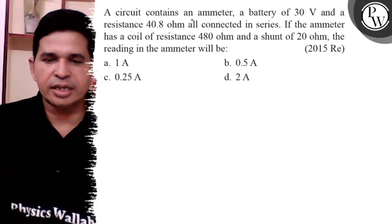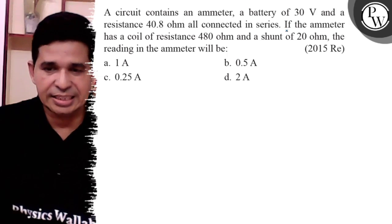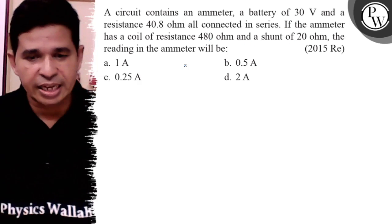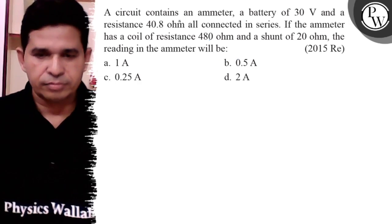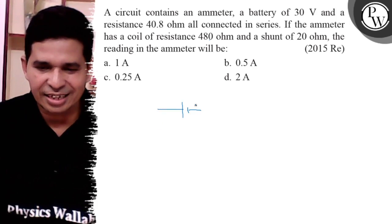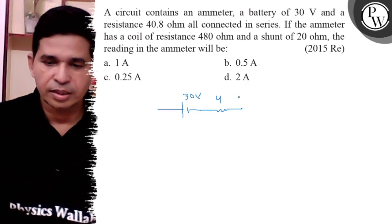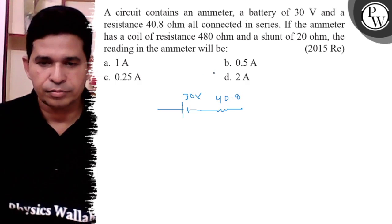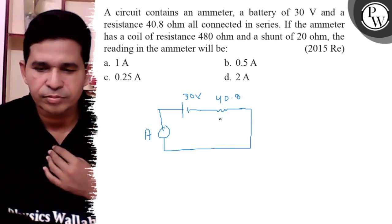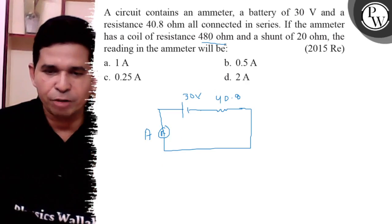Let us see this question. A circuit contains an ammeter, a battery of 30 volts, and a resistance connected in series. First, mark the diagram: it is the 30 volt battery, 40.8 ohm resistance, and the ammeter is also connected. In the ammeter, there is the galvanometer resistance and a shunt resistance.